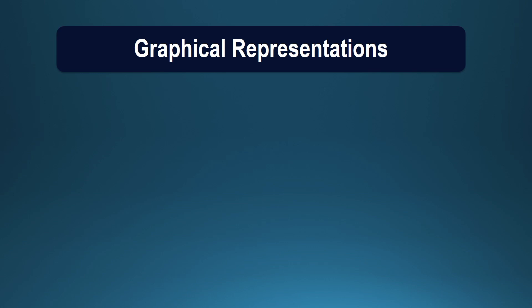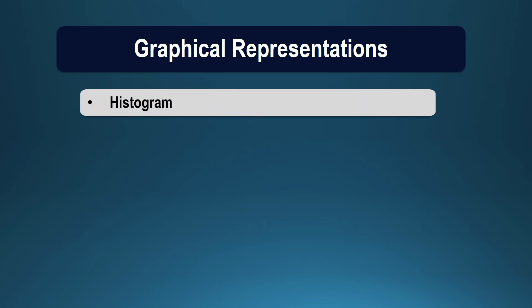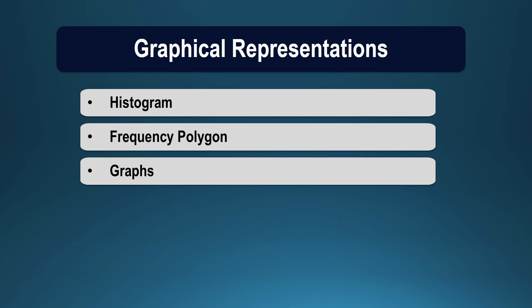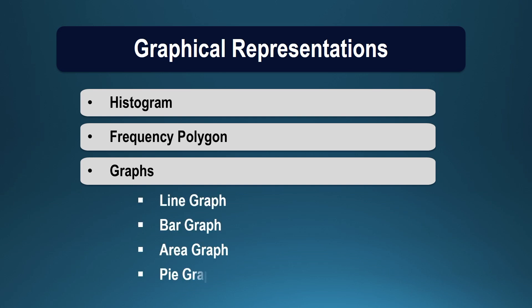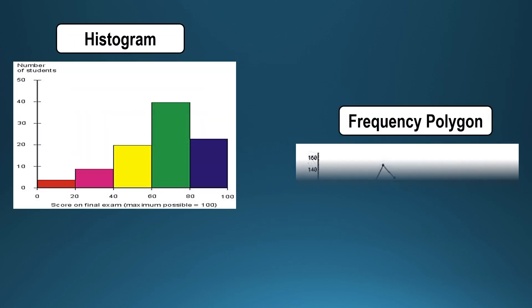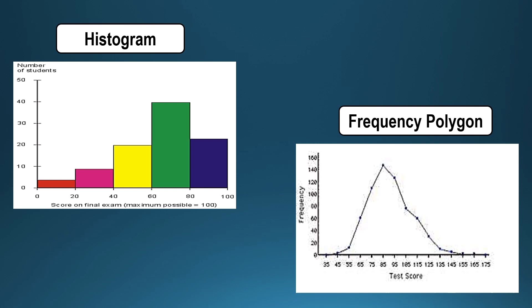You can also think of converting your data set into graphical representation, which can include preparing histograms, frequency polygons, or graphs, which may include line graph, bar graph, area graph, or pie graph. Histogram assumes that the scores in a particular class interval are spread evenly in the class interval, whereas the frequency polygon assumes that the midpoint of the class interval represents the scores in the best manner. This is the difference when we go in for drawing a histogram or a frequency polygon.